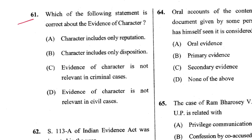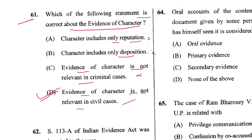Question 61: Which statement is correct about evidence of character? Character includes only reputation or disposition — both are wrong. Evidence of character is not relevant in criminal cases — wrong. Evidence of character is not relevant in civil cases — correct. D is the answer. The provision for character evidence is Section 52, and Sections 53, 54, and 55.